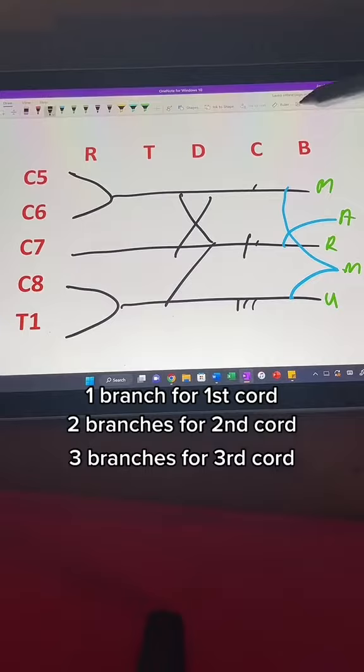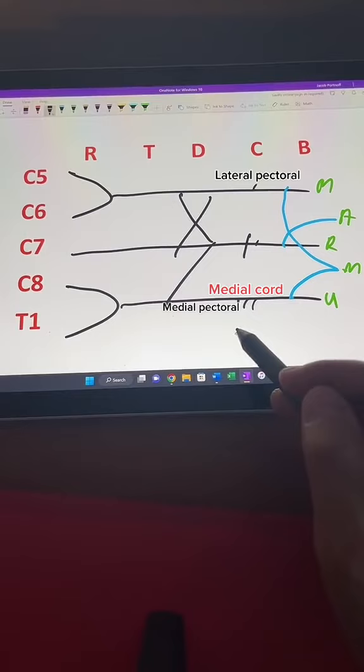At the lateral cord, it starts with an L, lateral pectoral. Our medial cord branches start with an M, medial pectoral, medial brachiocutaneous, medial antebrachiocutaneous.